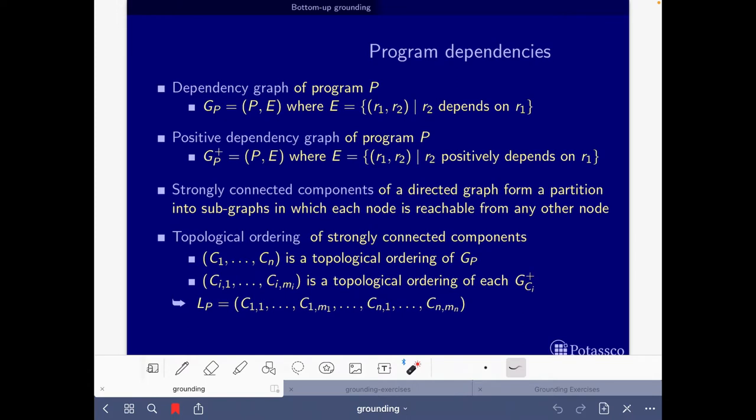And then for each of these ci, we will take into account, we will come up with a topological ordering of it, of its positive dependency graph, of the positive dependency graph of this component of the topological ordering of GP. Well, I think maybe looking at it here, it may look a bit complicated, but now we will see that this is something very simple. And then we just build this topological ordering of LP, just putting these things together.